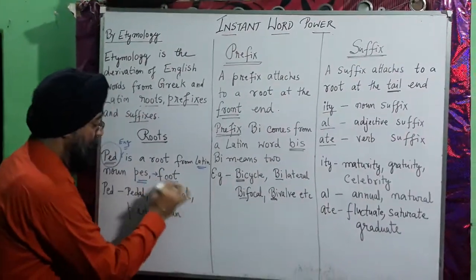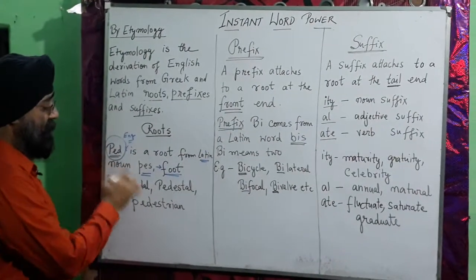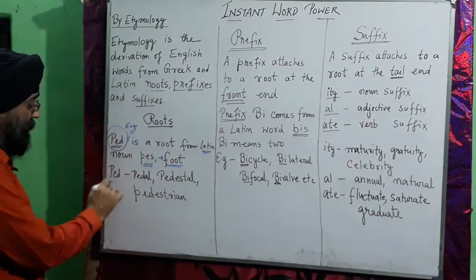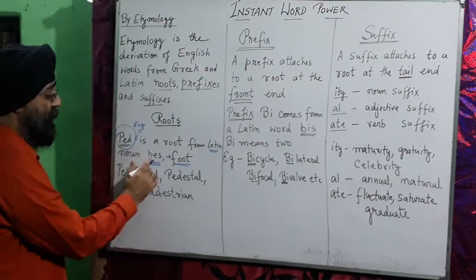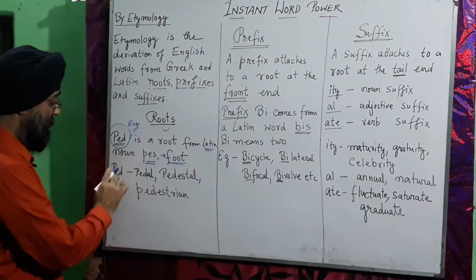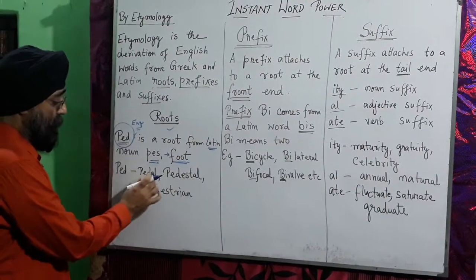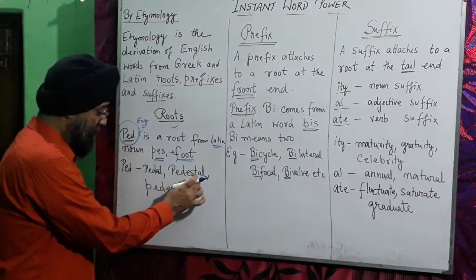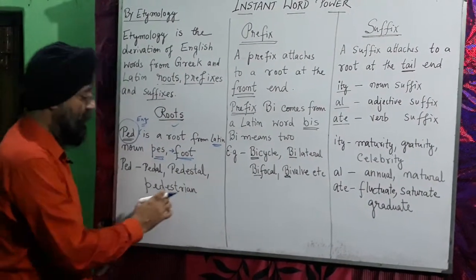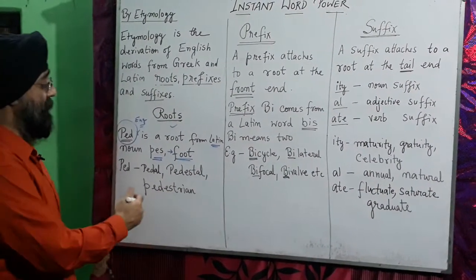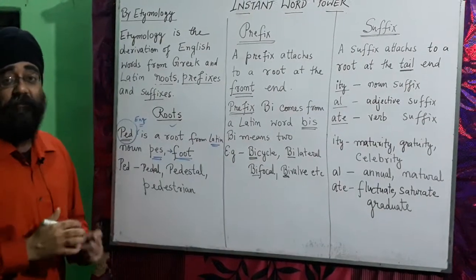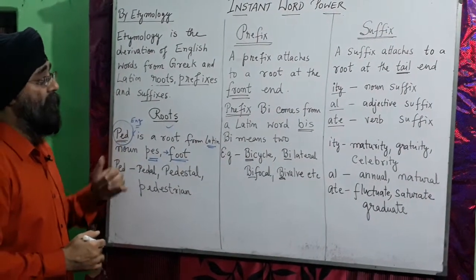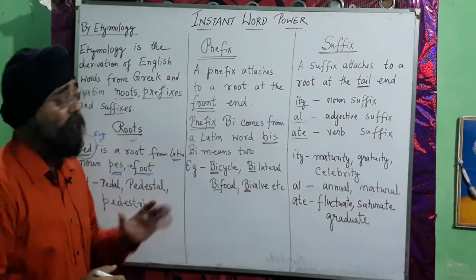PED has come from the Latin word PES, which means 'foot.' From this root word PED, we can form words like pedal, pedestal, and pedestrian. There can be many more words like these, but they have all come through the root word PED.